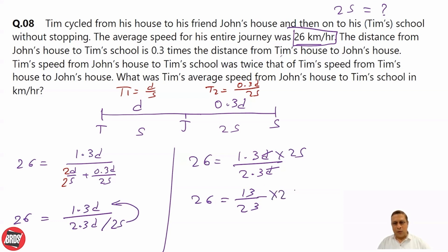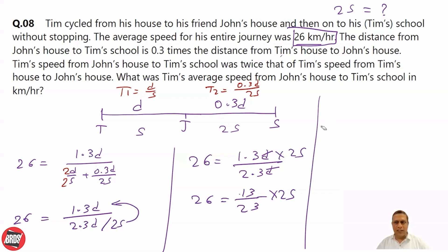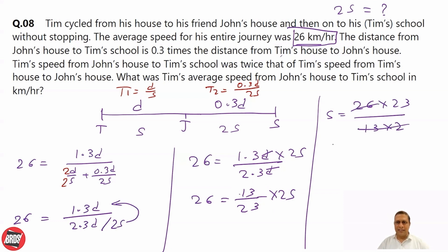So we have 26 = (13/23) × 2S. Solving for S: S = 26 × 23 / (13 × 2). Since 26 divided by 13 = 2, this simplifies to S = 23.